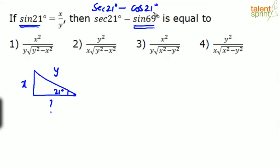Find secant 21 and cos θ from the triangle. The missing side is √(y² - x²) by Pythagoras. Secant θ is hypotenuse by adjacent, so y / √(y² - x²). Cos 21 is adjacent by hypotenuse, so √(y² - x²) / y. Do the simplification and you get the required answer.